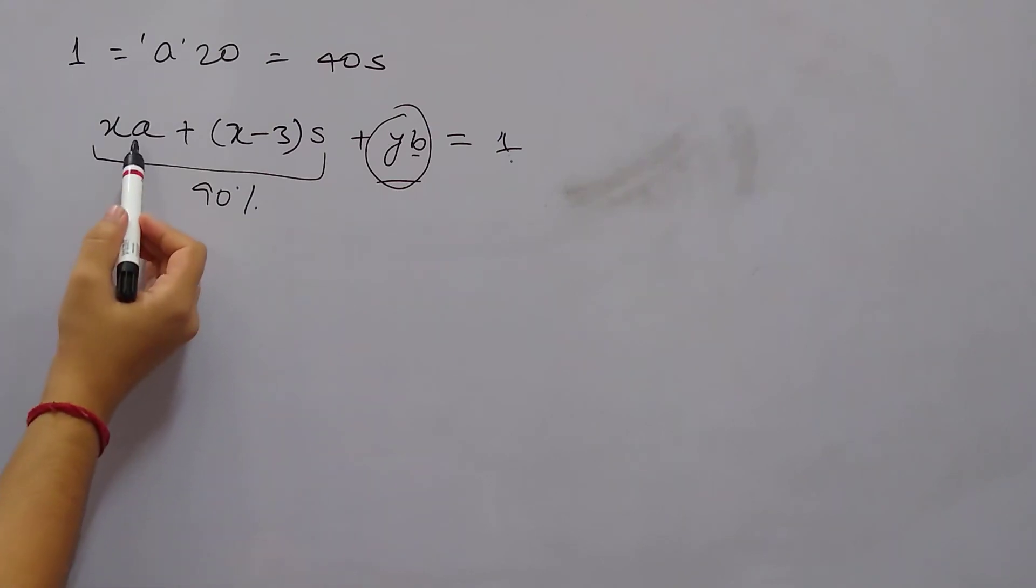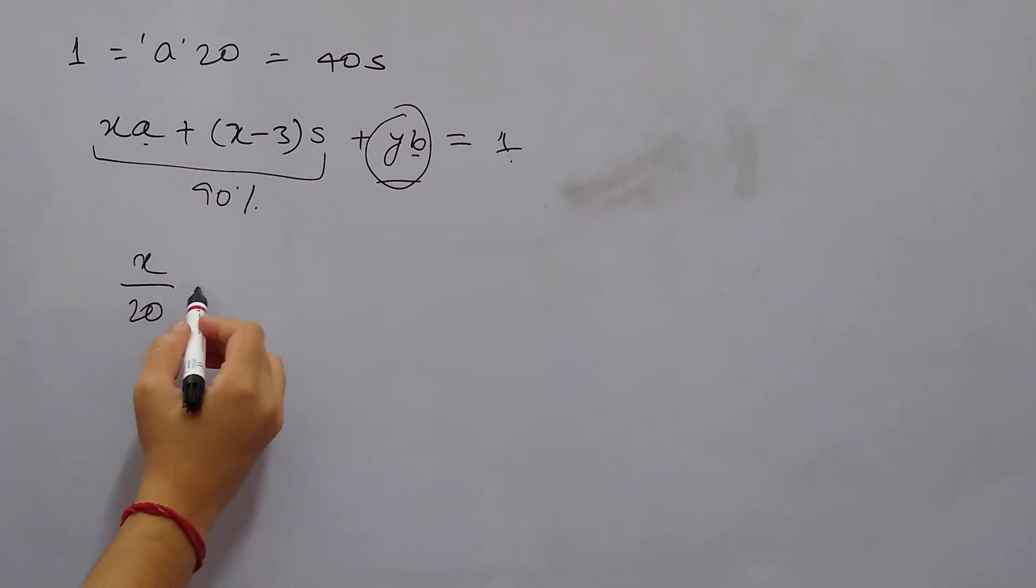Now again when we are rewriting this, we know the value of a is 1 by 20, so we can write this as x by 20, because 20a equals to 1 so a will be 1 by 20, plus s is 1 by 40.